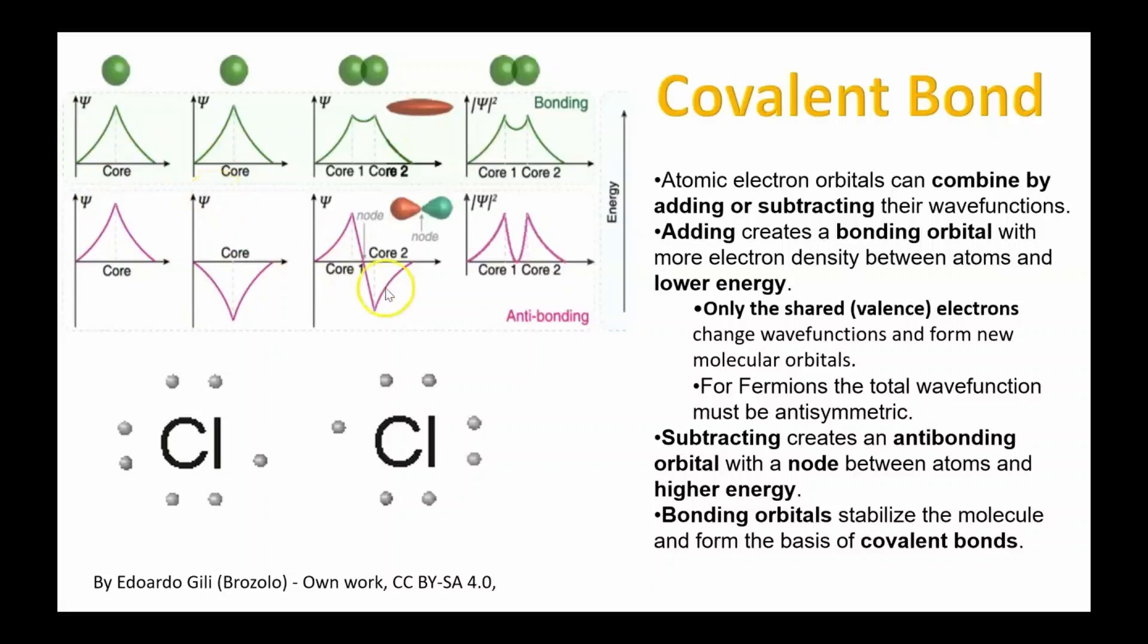Subtracting the two wave functions creates an anti-bonding orbital with a node in the middle, a region of zero probability. This raises the energy and does not promote bonding. Electrons are fermions, so the total wave function must be anti-symmetric. Because the two electrons have opposite spins, this bonding orbital is still allowed to exist. If more electrons were added and filled the anti-bonding orbital, the bond would be canceled and the molecule would not form. Only shared valence electrons change wave functions and form new molecular orbitals. Bonding orbitals stabilize the molecule and form the basis of covalent bonds.